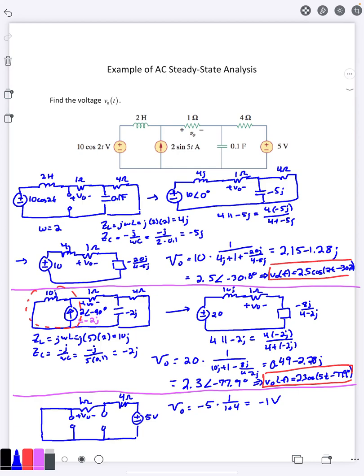And so for our final answer we're going to combine together everything. And we get V0 of t is 2.5 cosine 2t minus 30.8 degrees plus 2.3 cosine 5t minus 77.9 degrees minus 1. And that right there is our overall result.